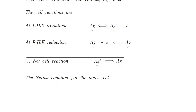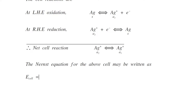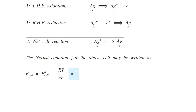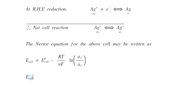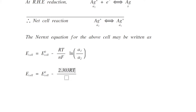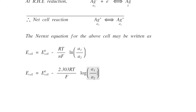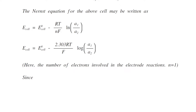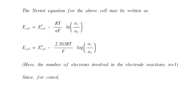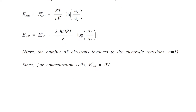The Nernst equation for the above cell may be written as: E_cell = E°_cell − (RT/NF) ln(A1/A2), or E_cell = E°_cell − (2.303 RT/F) log(A1/A2). Here the number of electrons involved in the electrode reactions is 1, so N is replaced with 1. Since for concentration cells both electrodes are the same, E°_cell becomes 0 volts.